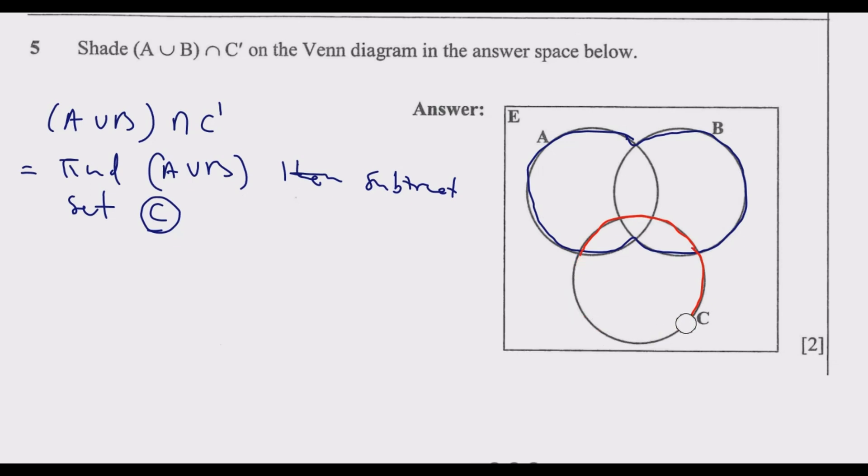When you take out that, what we are going to discover is we are going to end up with this part. Our new set now becomes this, because we are removing everything which is in C. That's what C complement means. At the end, we are going to end up with this shaded region. We are taking out C, and once you do this, you're good to go.